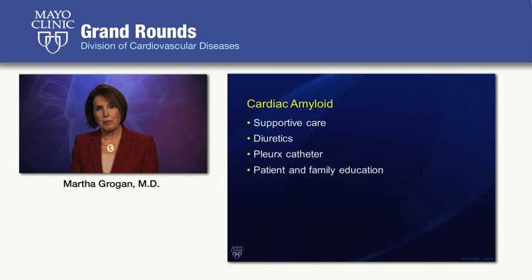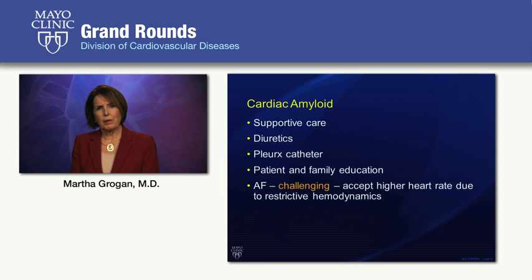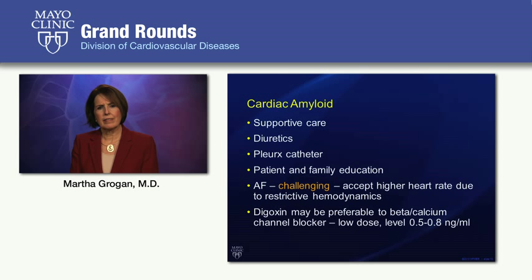Atrial fibrillation can be very challenging to manage. Patients with very restrictive hemodynamics often need a higher heart rate, and if we lower it excessively, they will often have worsening heart failure. Regarding digoxin — although it has long been felt to be contraindicated in cardiac amyloid, that is based on very little scientific evidence. It might actually be preferable to beta blockers and calcium channel blockers; if used, use it in low dose and monitor the trough level.